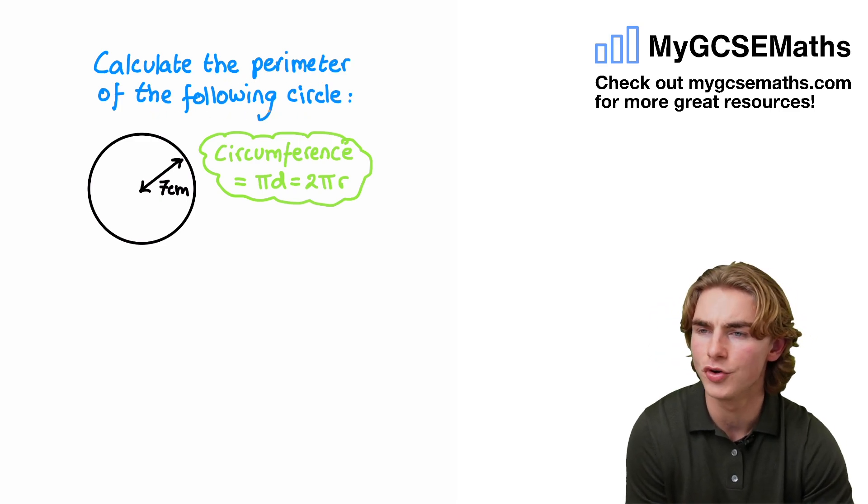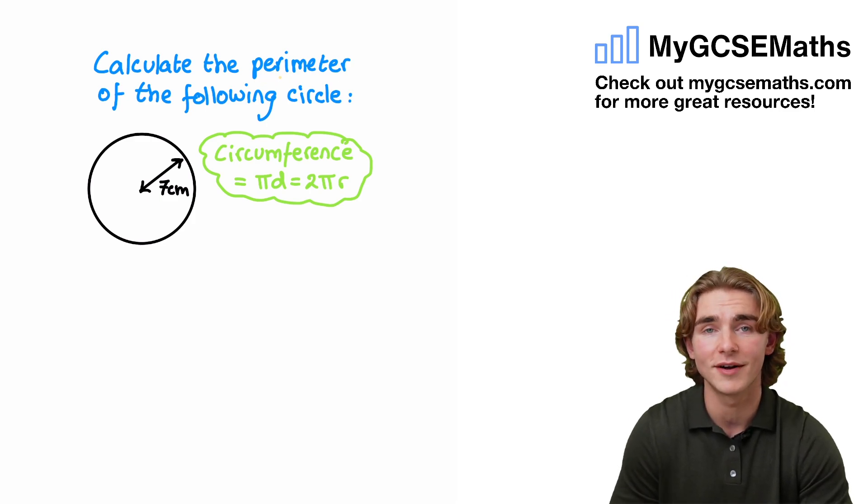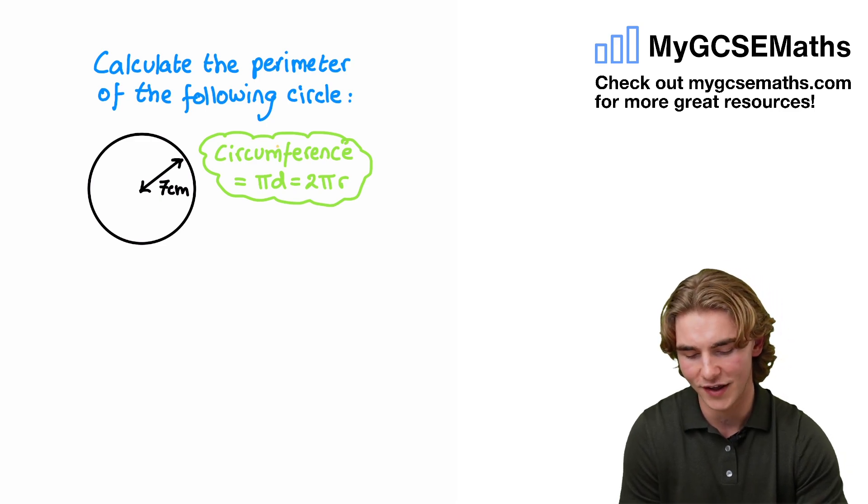Now, why do I say this trips people up? Normally, we don't actually get asked to work out the perimeter of a circle. In the case of a circle, we actually call the perimeter something else, we call it the circumference.